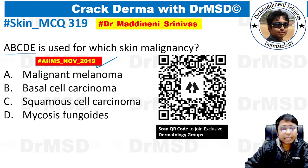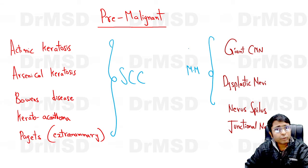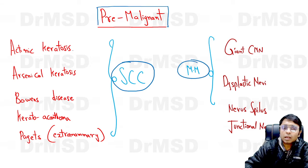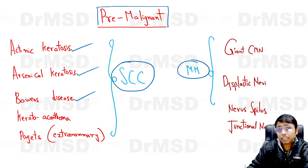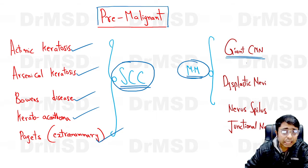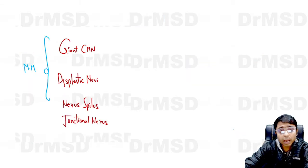The ABCDE criteria is used for malignant melanoma. You need to have a clear idea about the pre-malignant skin lesions associated with squamous cell carcinoma and malignant melanoma. Actinic keratosis, arsenical keratosis, Bowen's disease (which is squamous cell carcinoma in situ), keratoacanthoma — all are pre-malignant lesions for squamous cell carcinoma. Whereas for malignant melanoma, congenital melanocytic nevus more than 20 cm (giant CMN), dysplastic nevus, nevus spilus, and junctional nevus are the pre-malignant conditions.